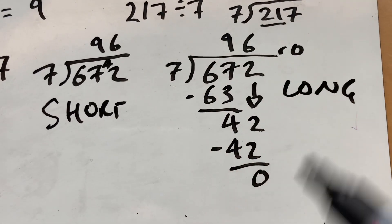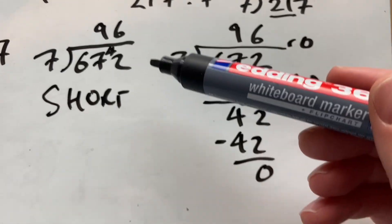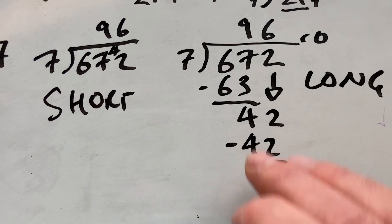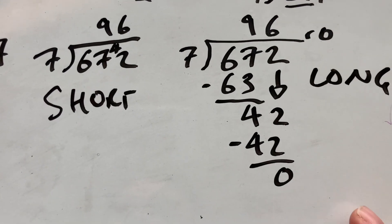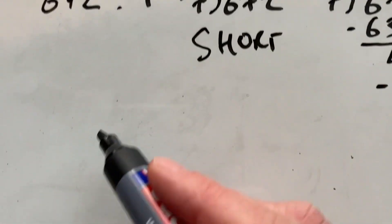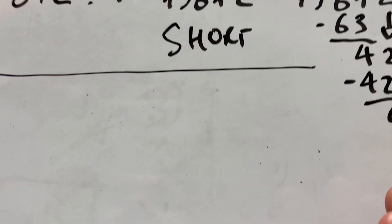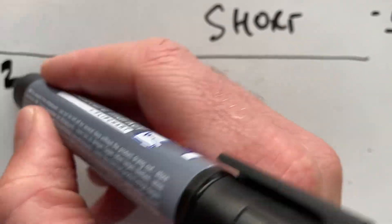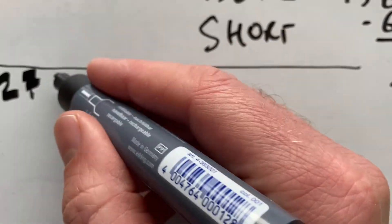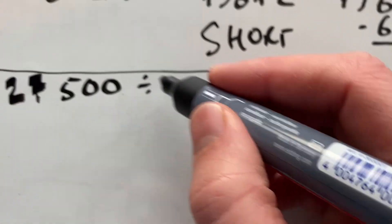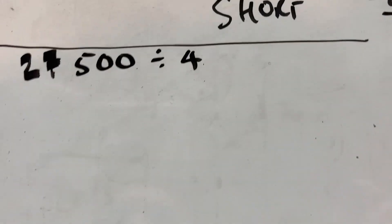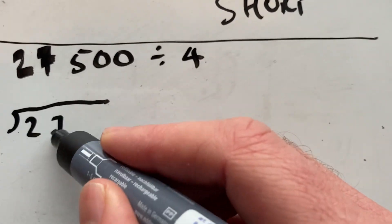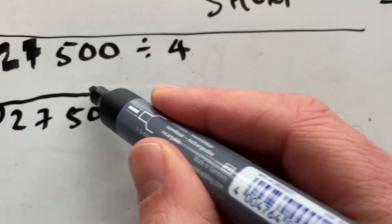So there you go — those are the two techniques, but you're really doing the same maths; it's just how you write it. In short division, all I've done is crammed all that information up inside the bus stop. Let's take another number: 27,500, and divide that by 4. I'll do it in both techniques again, starting with short division.